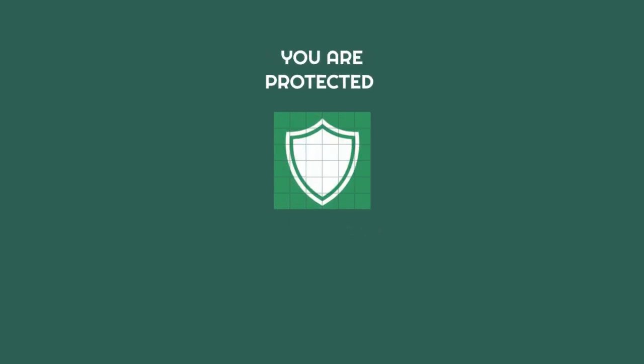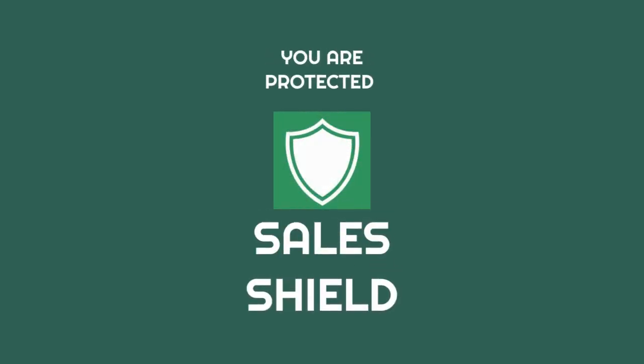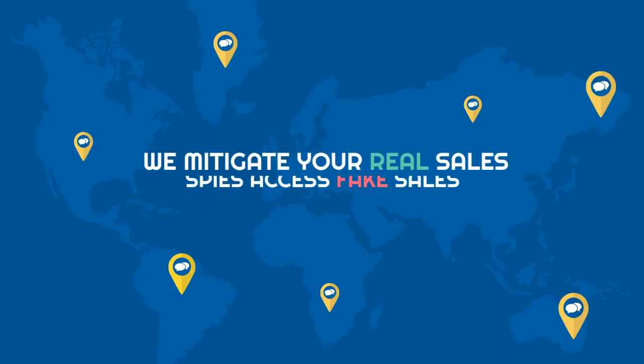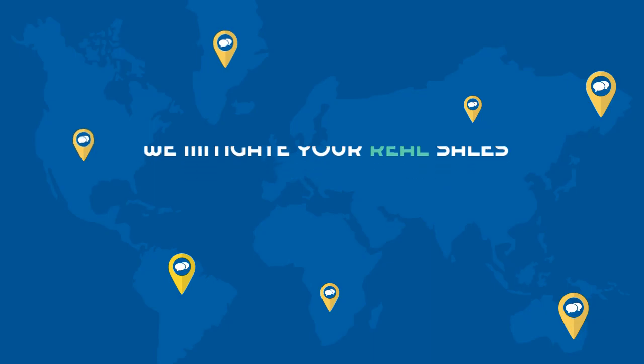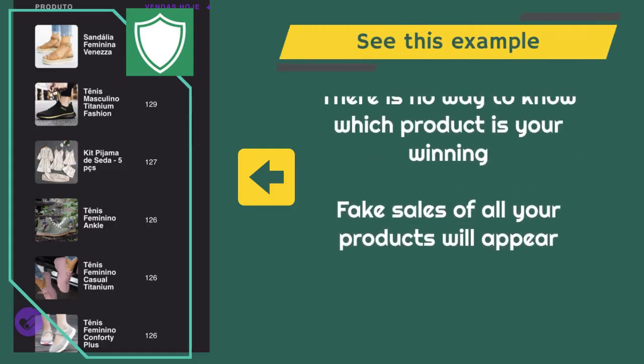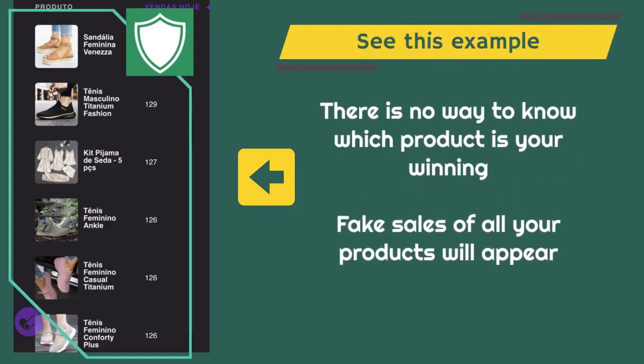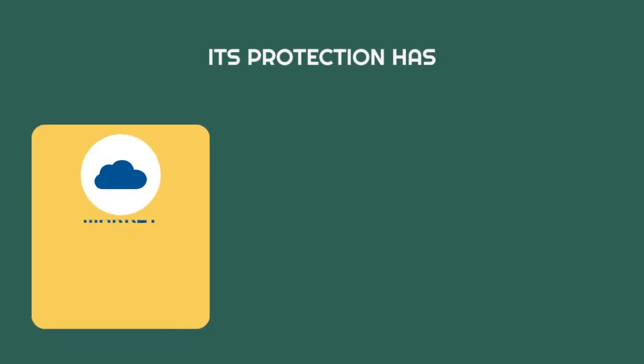But don't worry — you are protected. We mitigate your real sales; spies access fake sales. See this example: there is no way to know which product is your winning one. Fake sales of all your products will appear. Here is what Sales Shield offers.